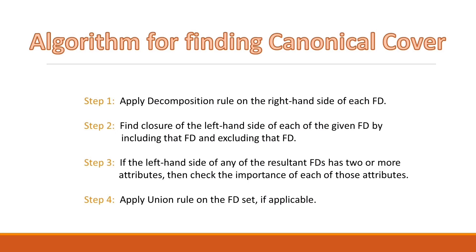Step three: if the left-hand side of any of the resultant FDs has two or more attributes, then we need to check the importance of each of those attributes. And finally, step four: you can apply the union rule on the FD set if applicable.